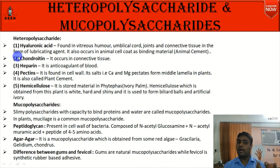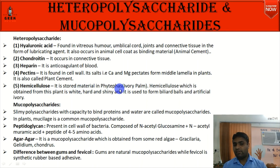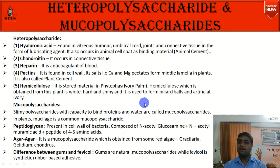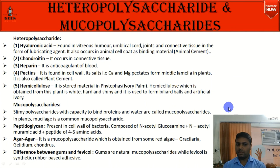Hemicellulose is a stored material in the phytophis (ivory palm). The hemicellulose obtained from this plant is white, hard, and shiny, and is used to form billiard balls and artificial ivory (elephant tusk substitute).